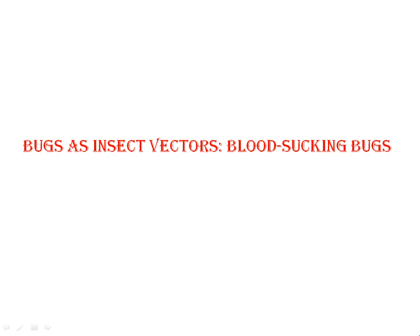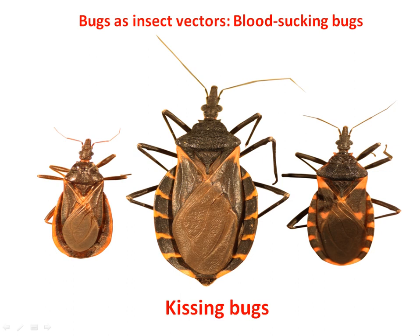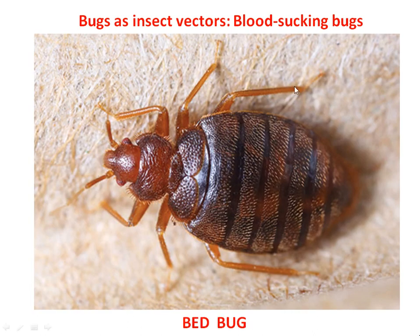Bugs as insect vectors are the blood-sucking bugs. This slide shows there is a category of bugs called kissing bugs, and these bugs are responsible for causing a dangerous disease called Chagas disease. You are all familiar with the bed bug, which is usually present in the residential environment, in houses.